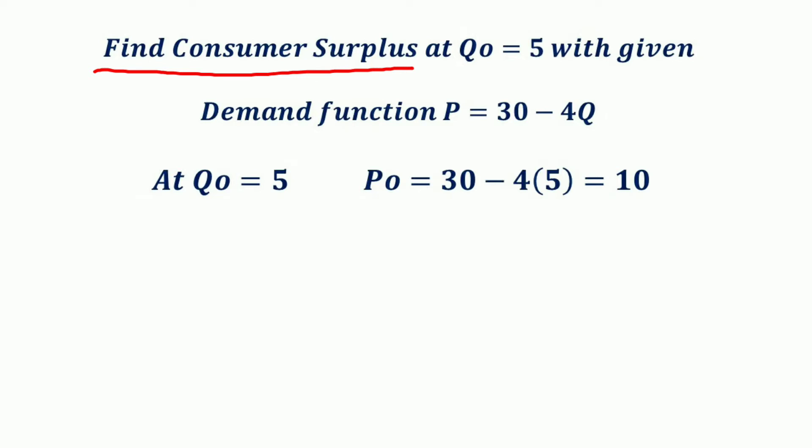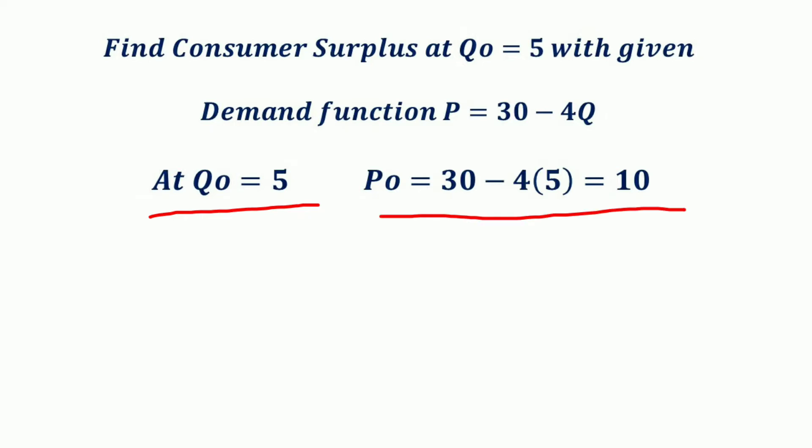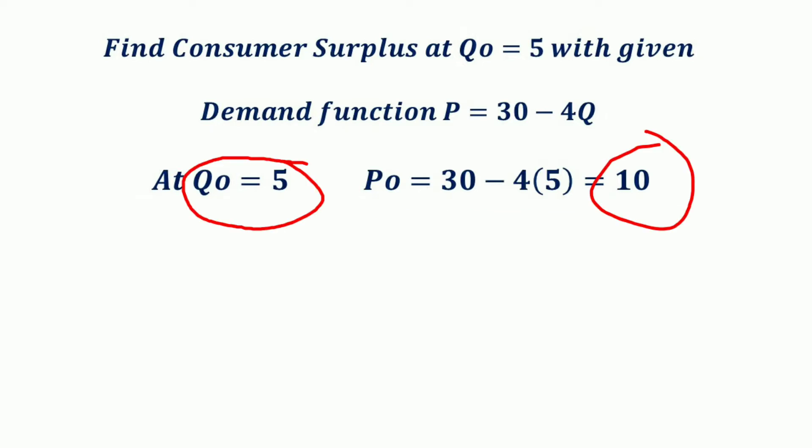To find the consumer surplus, we first need to get the equilibrium price and quantity. The equilibrium quantity Q₀ is given as 5. We calculate P₀, the equilibrium price, by substituting Q₀ = 5 into the demand function: P₀ = 30 minus 4 times 5, which gives 10. So the equilibrium quantity is 5 and the equilibrium price is 10.